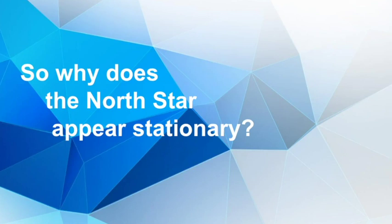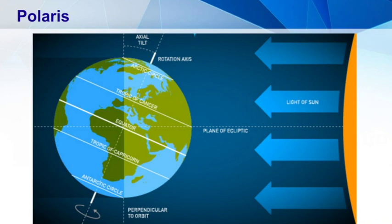So why does the north star appear stationary? Before we look at why Polaris appears to not move in the sky, it is important to understand the orientation of the Earth. The Earth's rotational axis is tilted about 23 and a half degrees, and this tilt is one of the reasons we experience seasons.